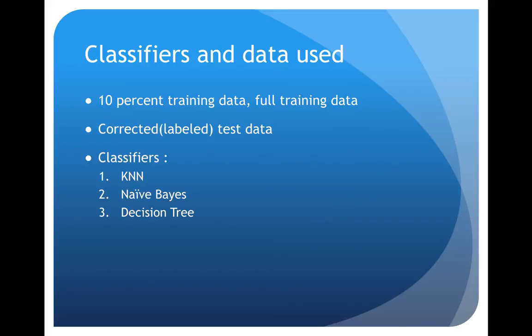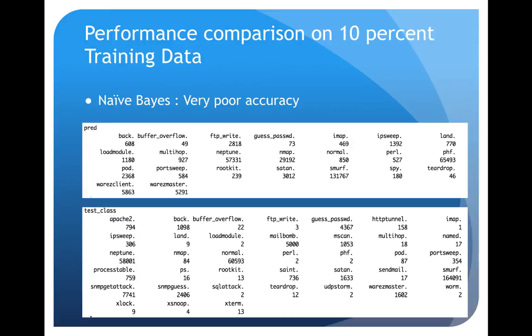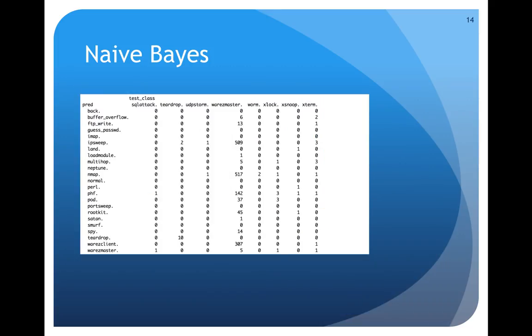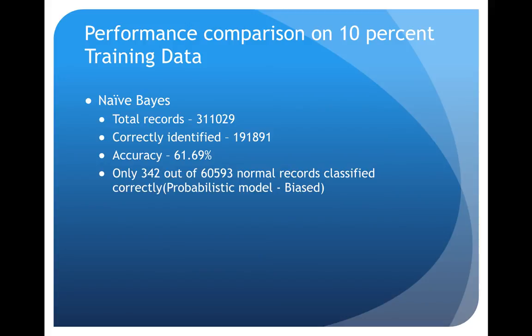I first ran Naive Bayes on the 10 percent training data and I got relatively poor accuracy. This is the R code snippet for Naive Bayes model and these are the confusion matrices. To summarize, I could only identify 191,891 records correctly with Naive Bayes model, which is about 61.69 percent accurate.